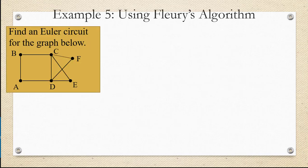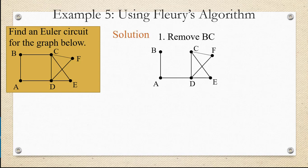So we're going to find an Euler circuit using Fleury's algorithm. We're going to start with going from vertex B to vertex C, and here I've removed that edge from the graph. Make a note to yourself that you've gone from B to C.